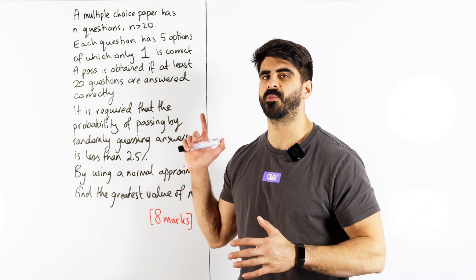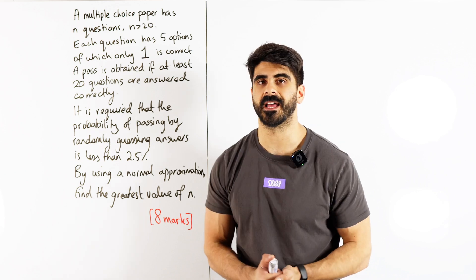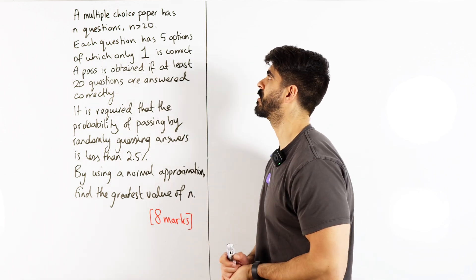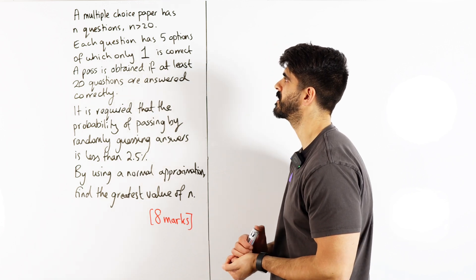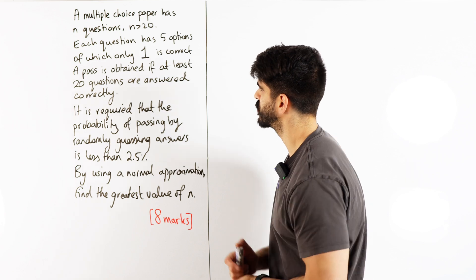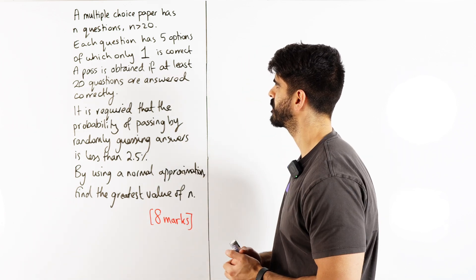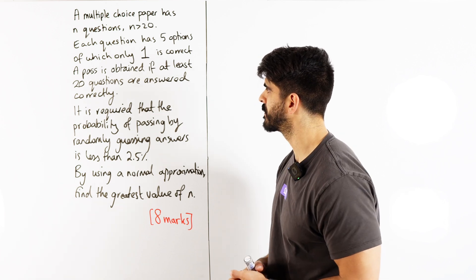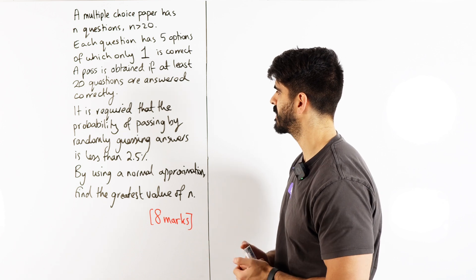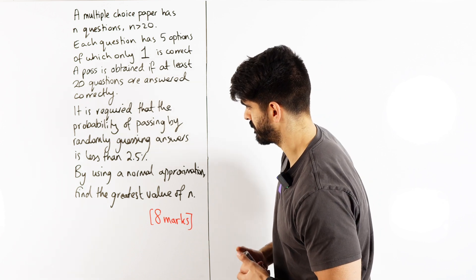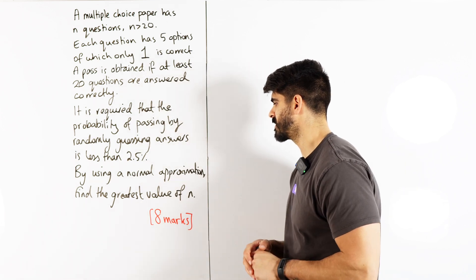Right, here is where the normal distribution actually gets difficult. If the examiners are feeling like demons they will ask you something like this for eight marks. It says a multiple choice paper has n questions where n is bigger than 20. Each question has five options of which only one is correct. A pass is obtained if at least 20 questions are answered correctly. It is required that the probability of passing by randomly guessing answers is less than 2.5 percent. By using a normal approximation find the greatest value of n.